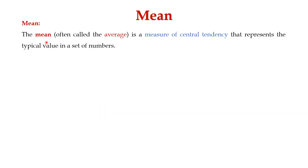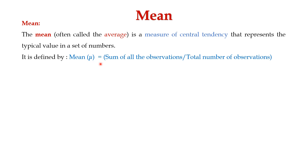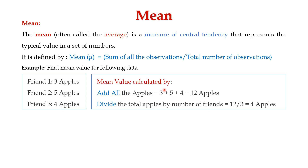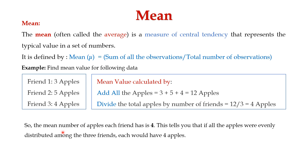Now let's learn about mean. The mean is often called the average, and it is a measure of central tendency that represents the typical value in a set of numbers. It is defined by the symbol mu, and the formula is the sum of all observations divided by the total number of observations. For example, friend 1 has 3 apples, friend 2 has 5 apples, and friend 3 has 4 apples. The mean is 3 plus 5 plus 4 divided by 3, which equals 12 divided by 3, giving 4 apples per friend.